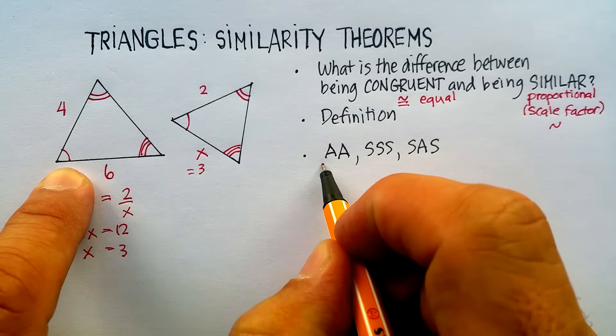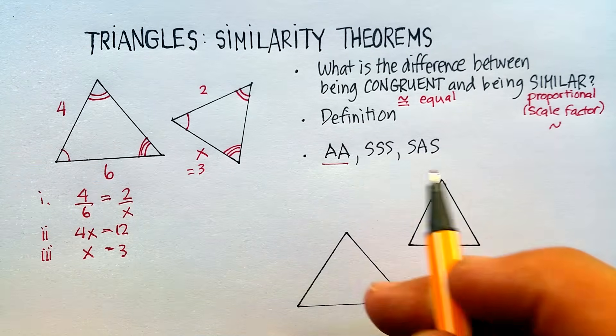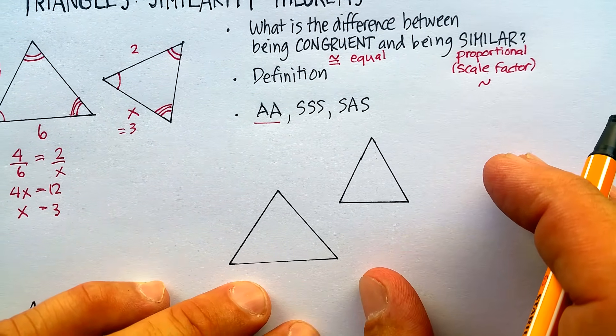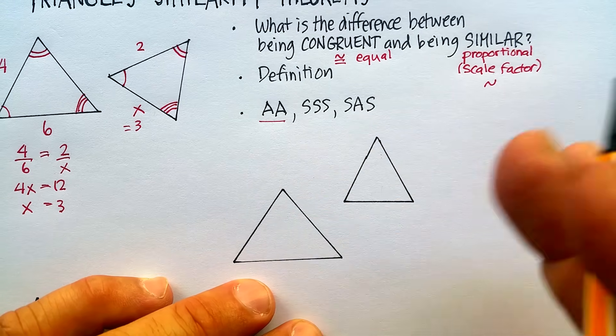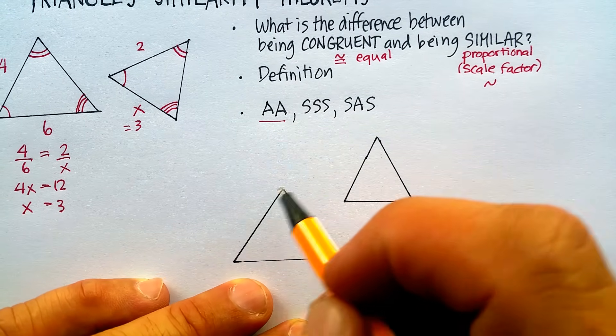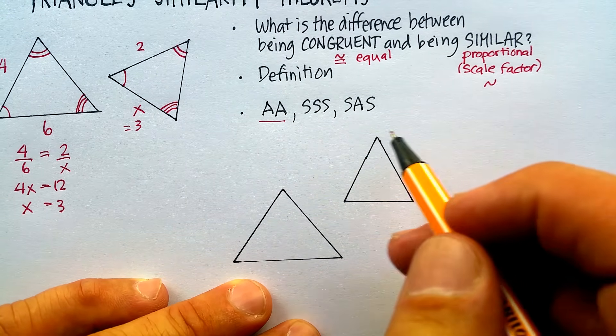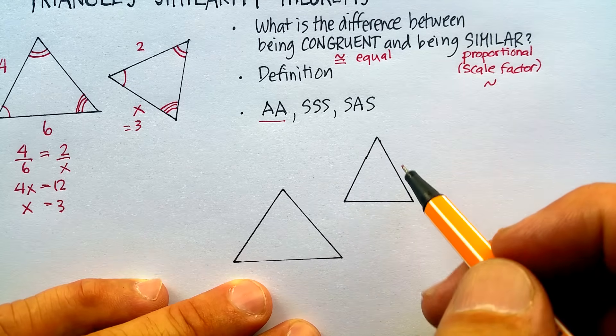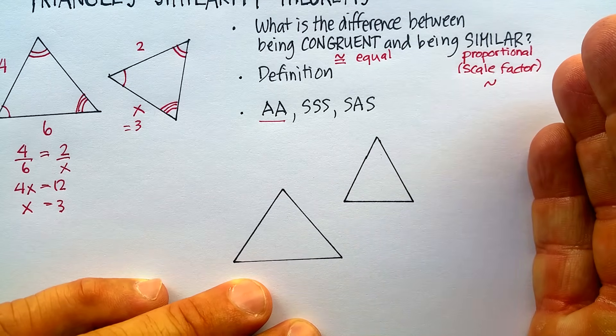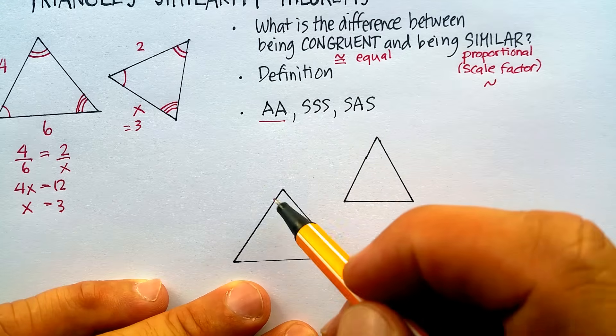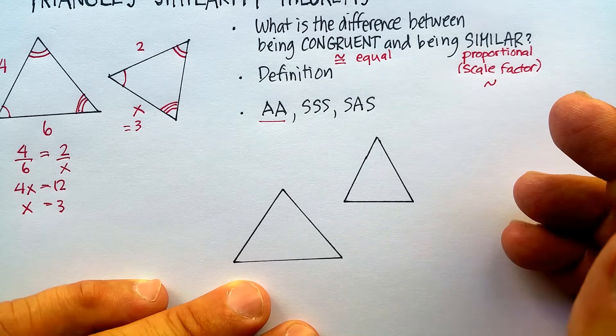That's the AA theorem. Let's go to the SSS theorem. Side-side-side basically means this: that if all three sides are proportional to all three sides of another triangle, then you should be able to find the missing angles.